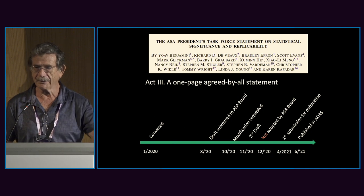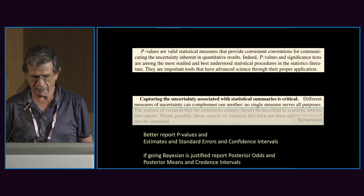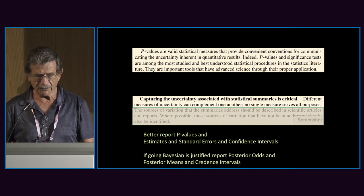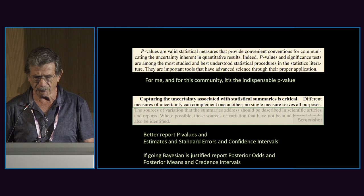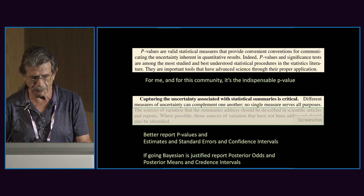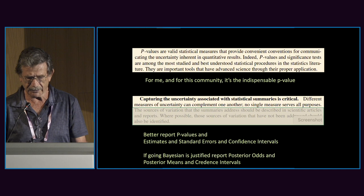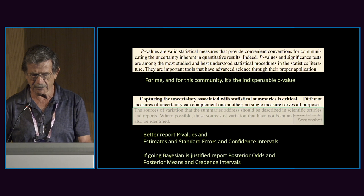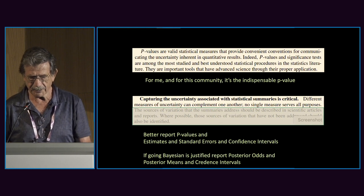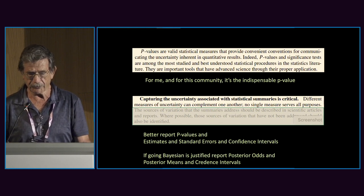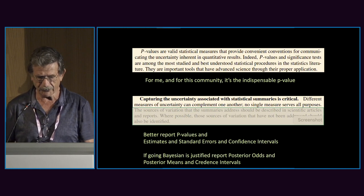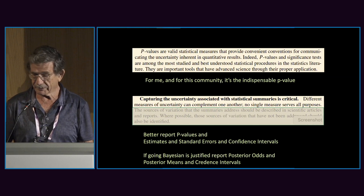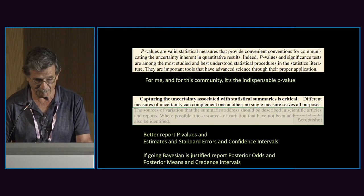They allowed us to publish it, and it appears in the Annals of Applied Statistics. The first point: p-values are valid statistical measures that provide convenient conventions for communicating uncertainty and qualitative results. Indeed, p-values and significance testing are among the most studied and best understood statistical procedures in the literature. They are important tools that have advanced science through their proper application — and for this community they are indispensable, not only important.